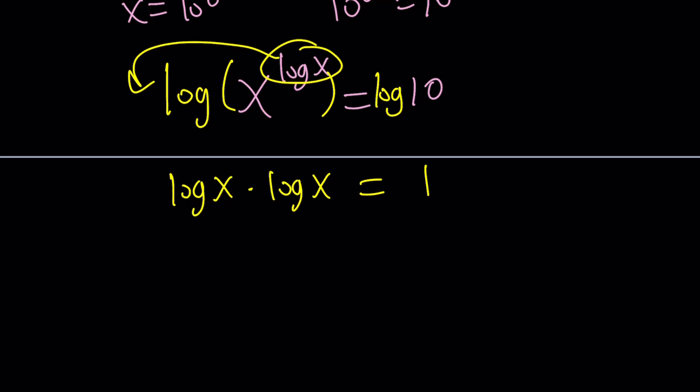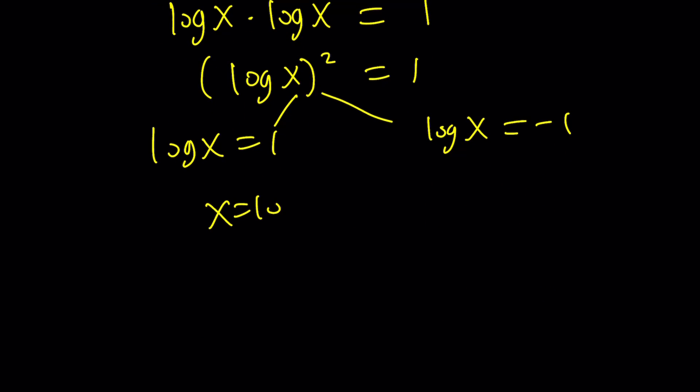because 10 to the power, what number equals 10? The answer is 1, and from here, we get log x squared equals 1, and this means log x is 1, or log x is negative 1, which means, again, x equals 10, or 1 over 10, 10 to the power negative 1.